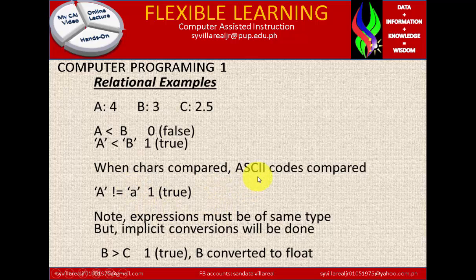Now when characters compared, ASCII code is compared. That is true. So 'A' is not equal to 'a'. That is true, because that is not equal. So we have capitalized letter and non-capitalized letter have different numeric values.